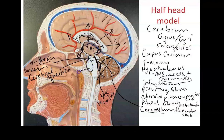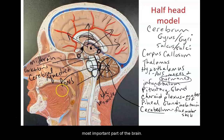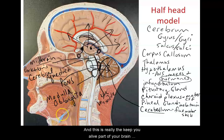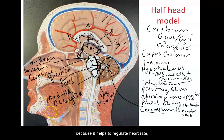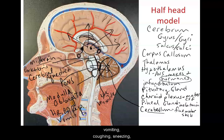This part of the brain is called the pons, and it helps to connect the brain stem to the cerebellum. Below that is the most important part of the brain for keeping you alive: the medulla oblongata. It helps to regulate heart rate, blood pressure, respiratory rate, vomiting, coughing, sneezing — essentially all the things that keep you alive.